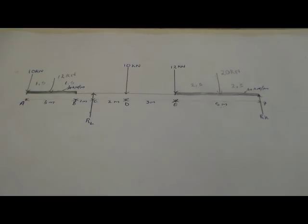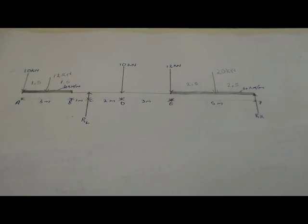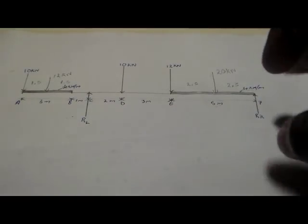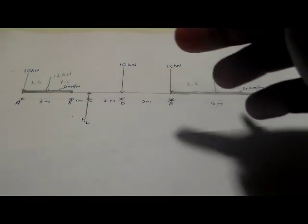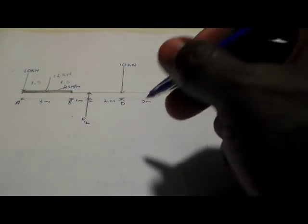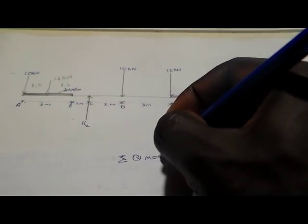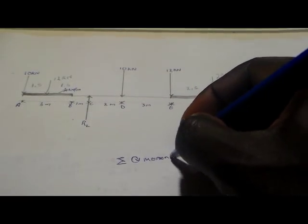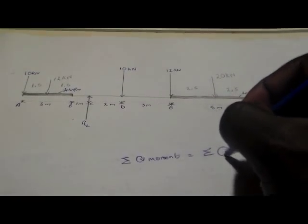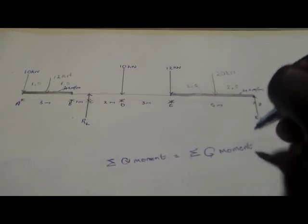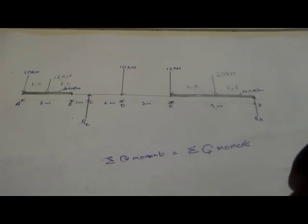Now we can calculate the reactions using the law of moments. The law of moments states that at equilibrium — meaning the beam is balanced — the sum of clockwise moments is equal to the sum of anti-clockwise moments.